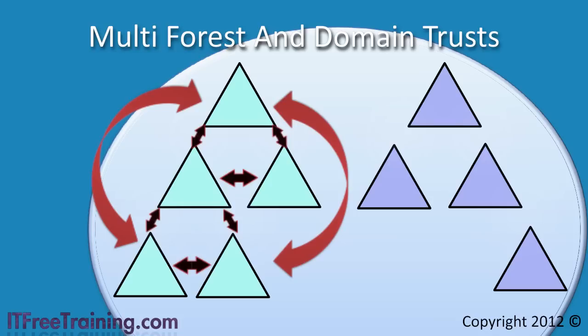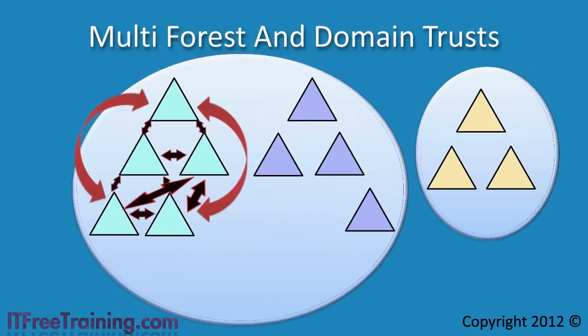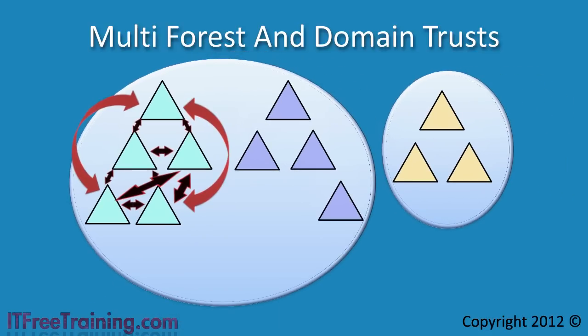Lastly, the two new child domains need to be connected to the other child domain like this. This is a total of 10 trusts for 5 domains. I have only done a small part of the diagram, but imagine if I did the whole lot. In order to ensure everyone has access to each domain, you would need to create 66 trusts for the 12 domains shown. This is why non-transitive trusts do not scale well. They are great in that you can choose which domain accesses which domains, but on any decent sized network managing these trusts soon becomes very difficult.